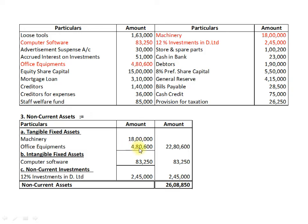Finally, we get Tangible Fixed Assets of Rs.22,80,600. The second subhead is Intangible Fixed Assets, and in the information we have Computer Software which belongs to the Intangible Fixed Assets category, amounting to Rs.83,250. Our third subhead of Non-Current Assets is Non-Current Investments, and we have 12% Investments in D Limited Rs.2,45,000. Adding all three gives Total Non-Current Assets of Rs.26,08,850.